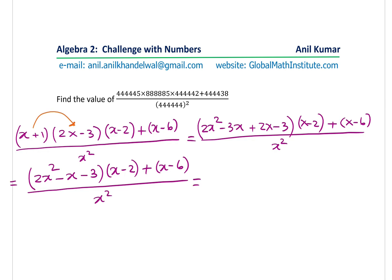Again, let's do the distributive property. Multiplying by x minus 2 this time, we get 2x cubed. First, we multiply by x, minus x squared minus 3x, then with minus 2, so we get minus 4x squared plus 2x plus 6, and we have plus x minus 6 divided by x squared.